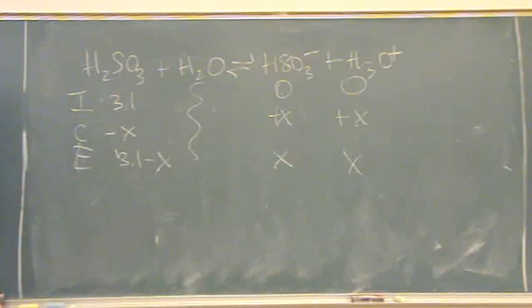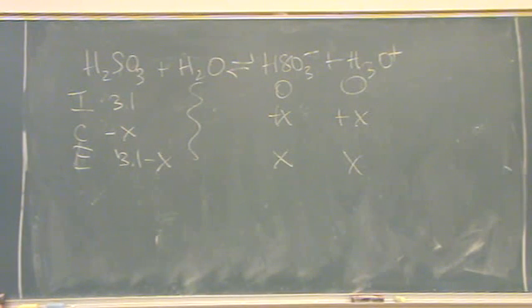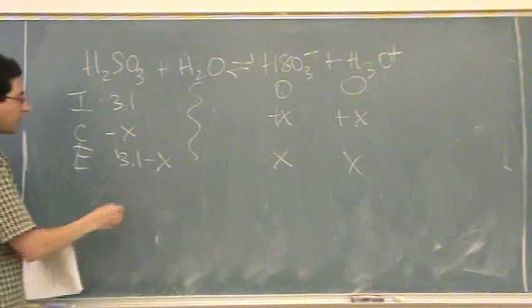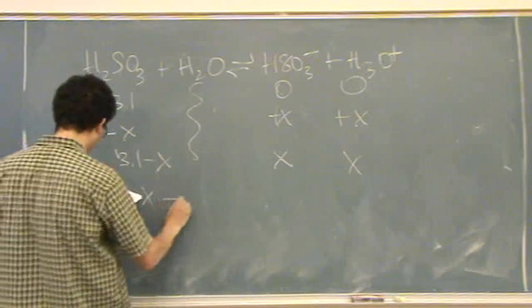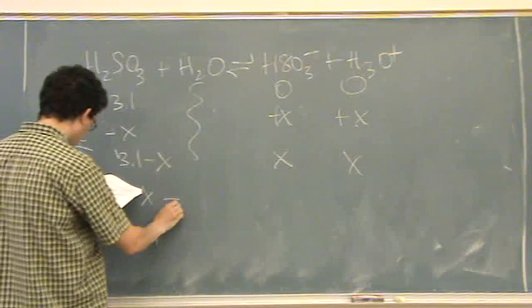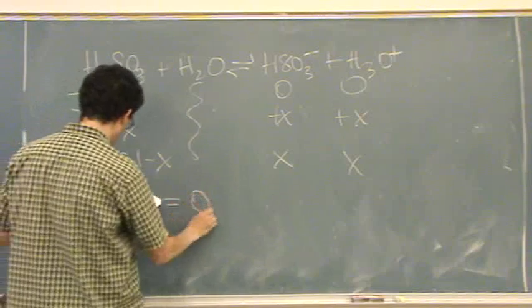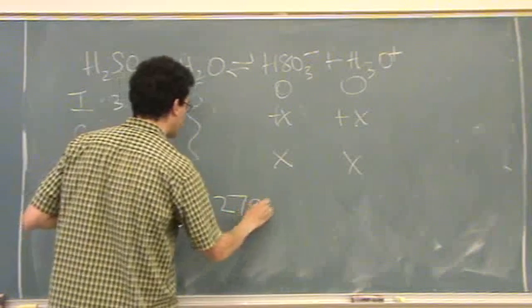In this one, you go through, you solve it using the, you can use a quadratic or you could use the ice table. It turns out that because the KA is slightly larger, 10 to the minus 2, this does, I just let it go either way, but it would have been better if you use a quadratic in this case. But either way, I solve for X, and you get, where is it, 0.2793.